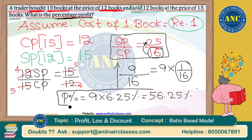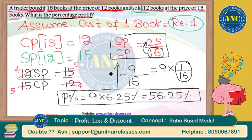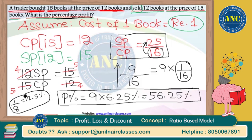How is 1/16 equal to 6.25? I taught you in my previous classes: 1/8 = 12.5%, and 1/16 is half of 1/8. Half of 12.5 is 6.25. So 9 × 6.25 = 56.25. The profit percentage for this question is 56.25%.